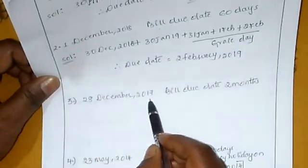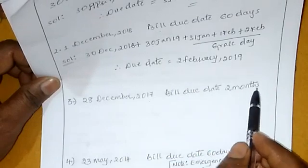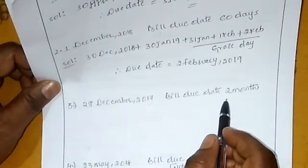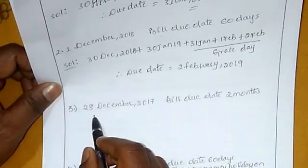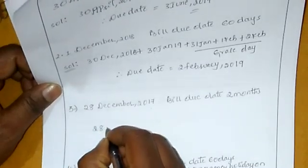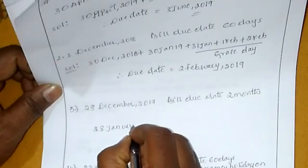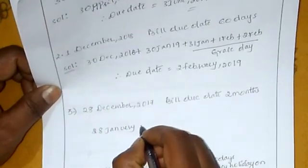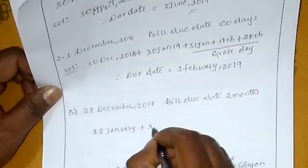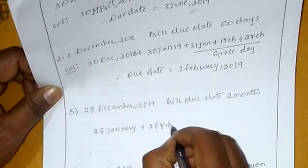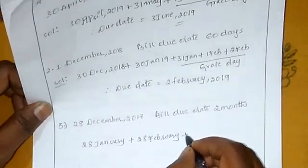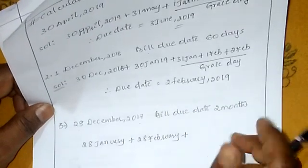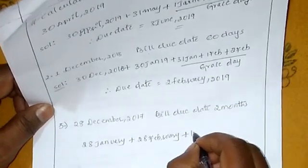Third example: a bill dated in 2017, due date 2 months. So 2 months means we add months. The date is 28th January, plus 1 month is 28th February, plus 2 months. Adding 3 grace days — sorry, 3 days grace days actually.